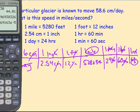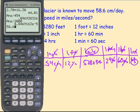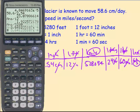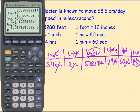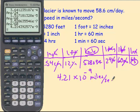58.6. That's it on the top. So divided by 2.54. Divided by 12. Divided by 5,280. Divided by 24. Divided by 60. Divided by 60. Once again, it's three significant digits. 4.21 times 10 to the minus 9 miles per second.